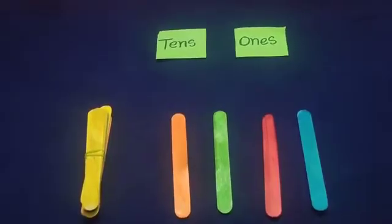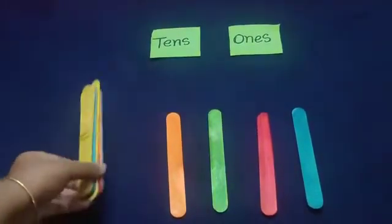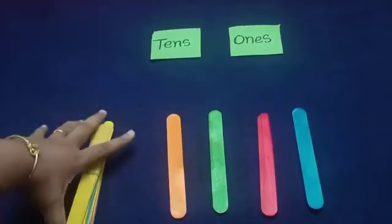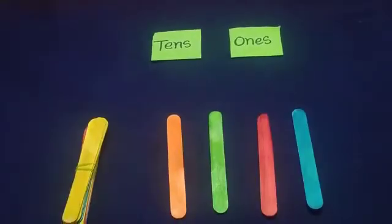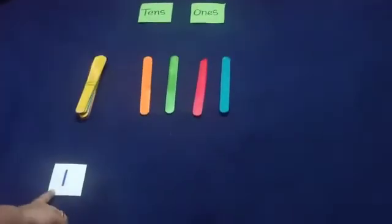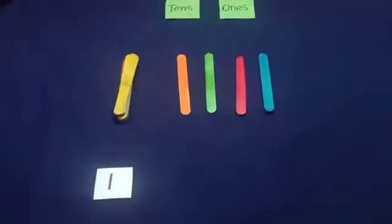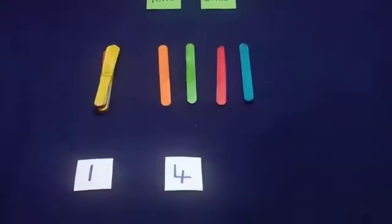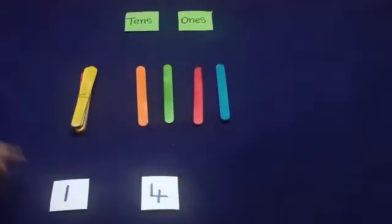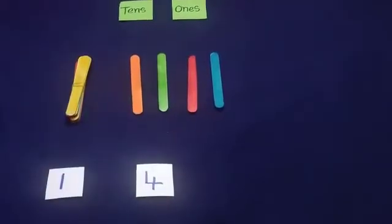Now, let us see how to write the tens and ones — totally how many ice cream sticks are there. How many bundles of ten am I having? I am having one bundle of ten. How many ice cream sticks am I having separately? One, two, three, four — four ice cream sticks. So totally, how many ice cream sticks? Fourteen — that is ten plus four, that is fourteen.